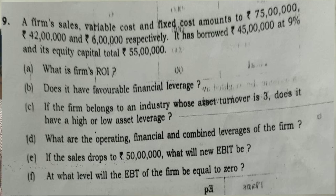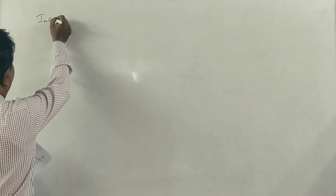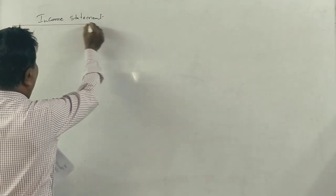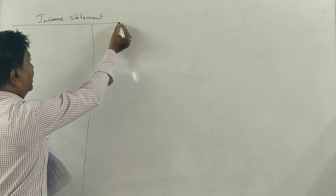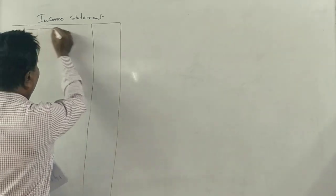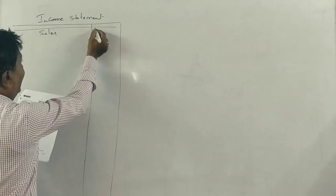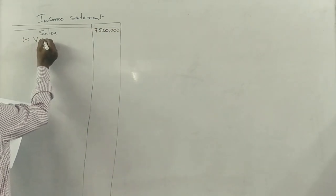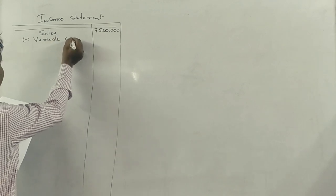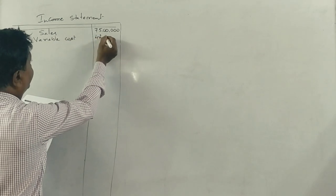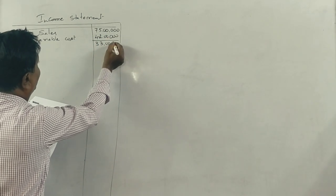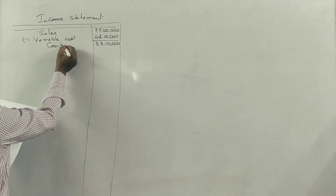First, we have to prepare an income statement. Sales is ₹75 lakhs. Variable cost minus ₹42 lakhs. So contribution is ₹33 lakhs.